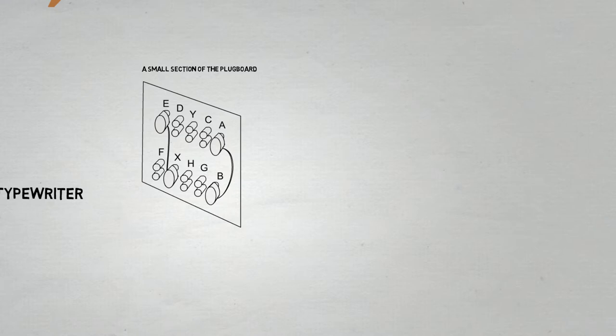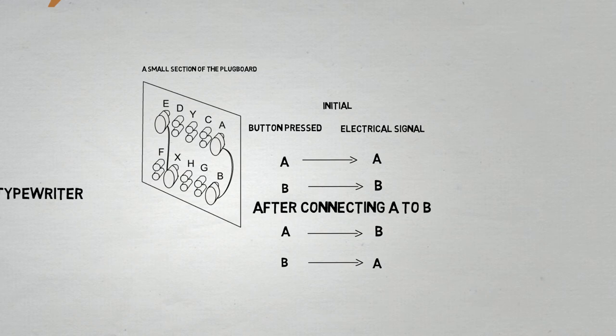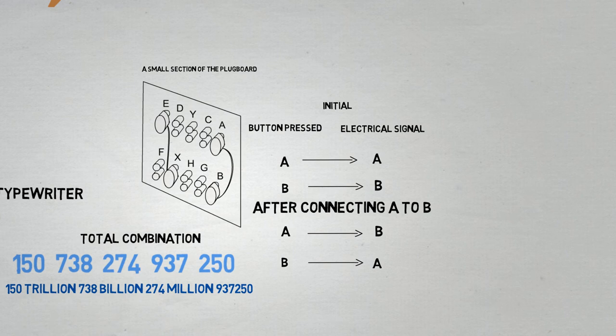The electrical signals could be rewired manually. Wires could be used to connect any two alphabets into a pair. Alphabets that form the pair will be swapped over. This meant that if A and B were connected together, B becomes A and A becomes B. Imagine if you connected multiple pairs of alphabets together. Yes, this feature would create billions of additional possibilities to the Enigma machine's combinations.